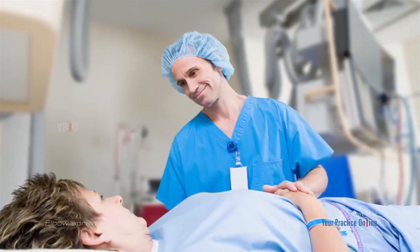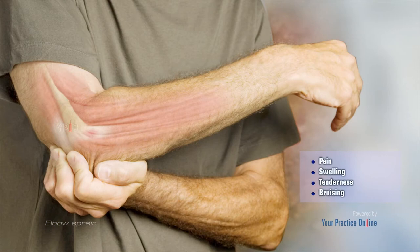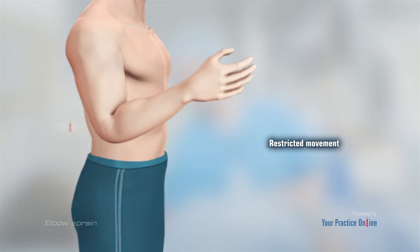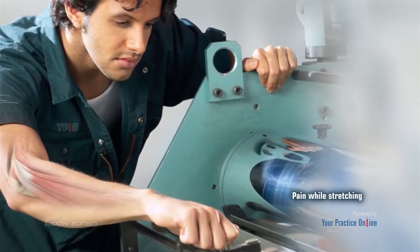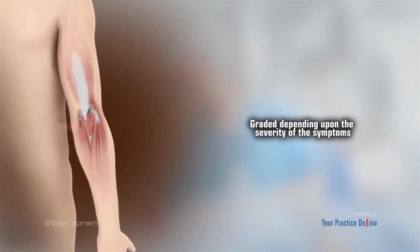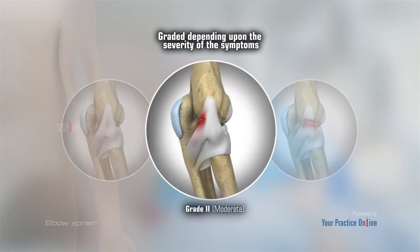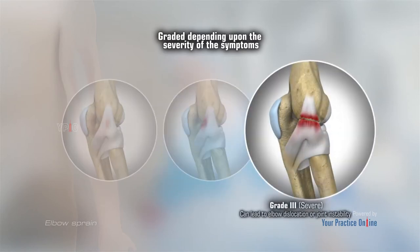The common symptoms of elbow sprain include pain, swelling, tenderness and bruising around the elbow, restricted movement of the elbow, and pain at the elbow joint while stretching. Elbow sprains are graded depending upon the severity of the symptoms as grade 1 mild, grade 2 moderate, and grade 3 severe. Severe elbow sprains of grade 3 can lead to elbow dislocation or joint instability.